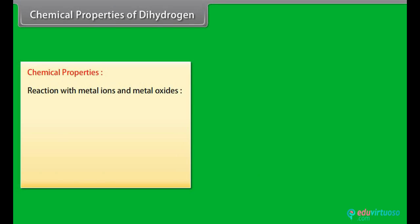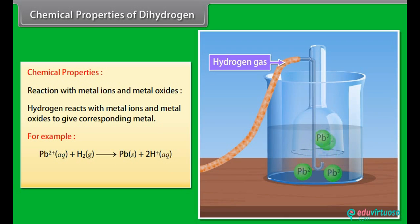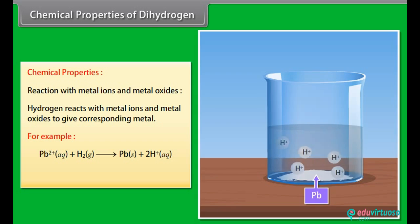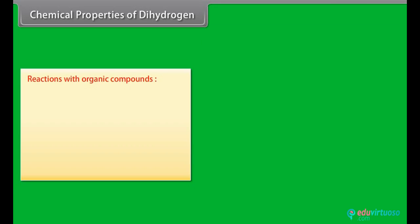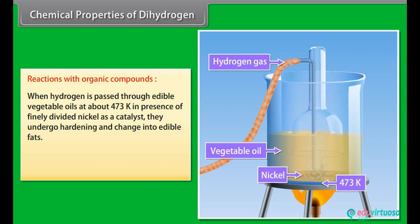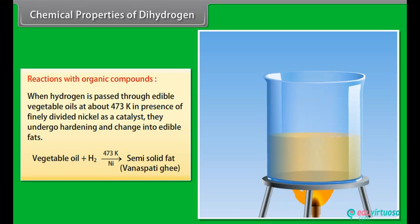Chemical properties of dihydrogen. Reaction with metal ions and metal oxides: Hydrogen reacts with metal ions and metal oxides to give corresponding metal. Reactions with organic compounds: When hydrogen is passed through edible vegetable oils at about 473 Kelvin in presence of finely divided nickel as a catalyst, they undergo hardening and change into edible fats.